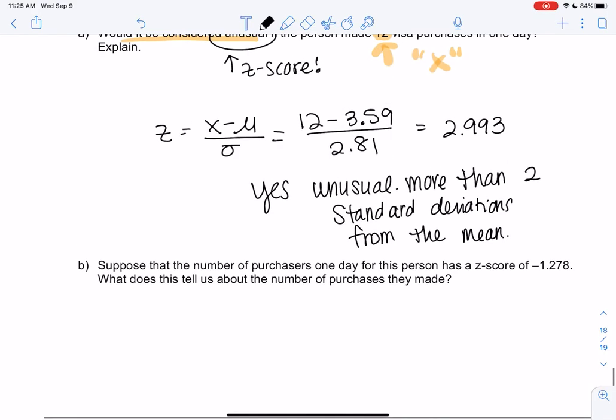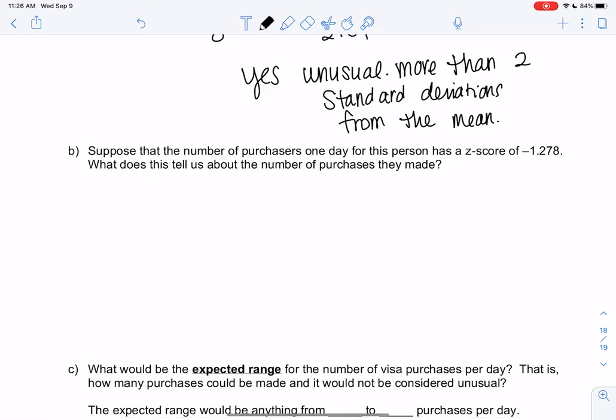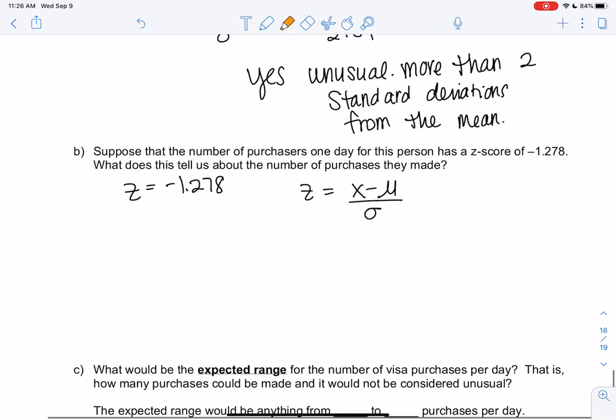Let's kind of go backwards—it'll be a little bit of algebra practice. Now we know that the z-score is negative 1.278. How many purchases did they make? In terms of the formula, we're just going to solve for x, which would be the number of purchases. Negative z-scores just mean less than average—z-scores can be negative, it just means less than average rather than more.